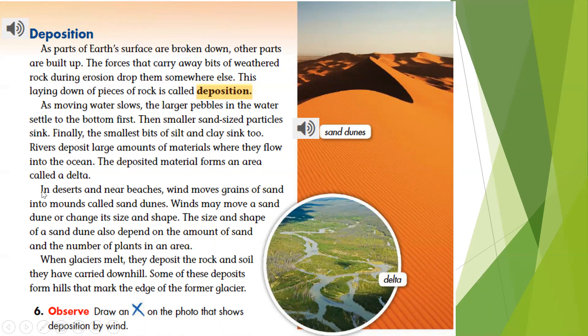In deserts and near beaches, wind moves grains of sand into mounds called sand dunes. Winds may move a sand dune or change its size and shape; the size and shape also depend on the amount of sand and the number of plants in an area. When glaciers melt, they deposit the rock and soil they carried downhill, and some of these deposits form hills that mark the edge of the former glacier. Notice the shape of the sand dunes here, and do you see the ripple pattern on the sand itself? That is also caused by the wind.